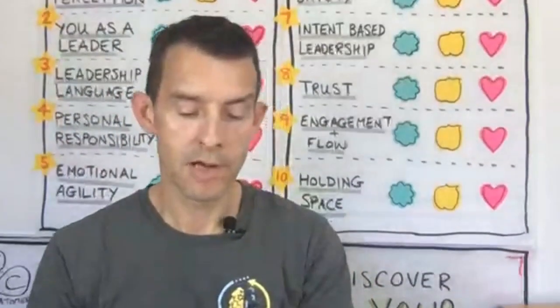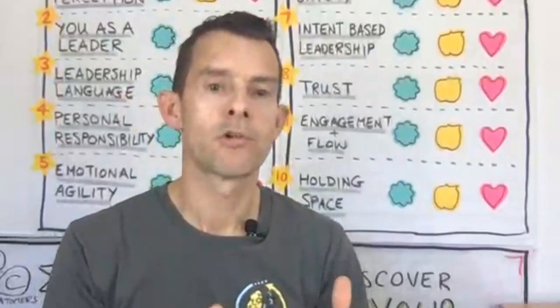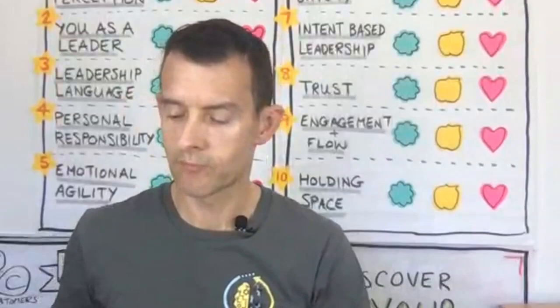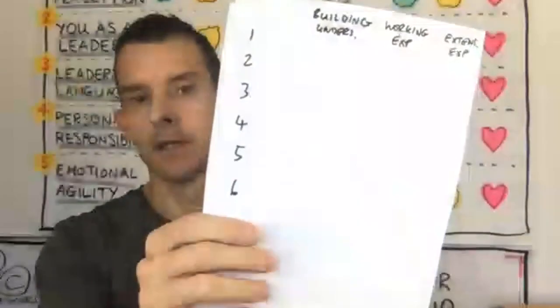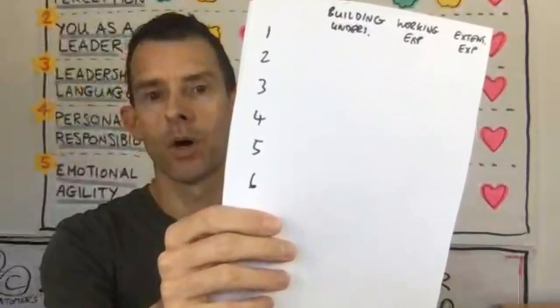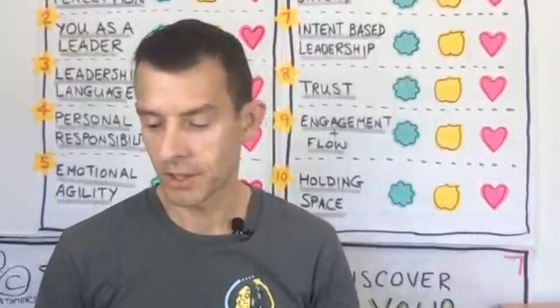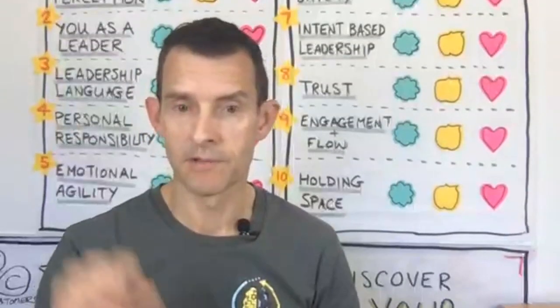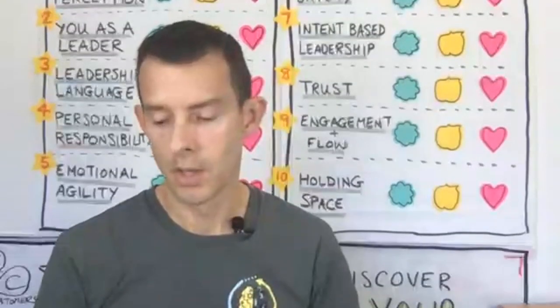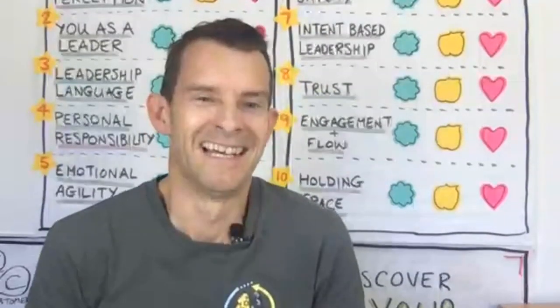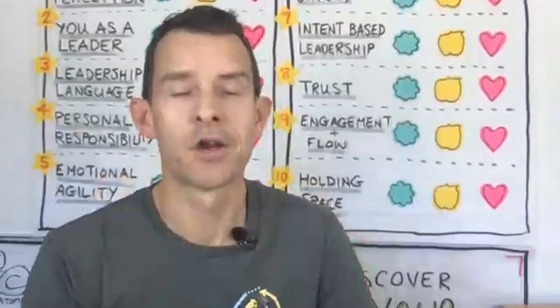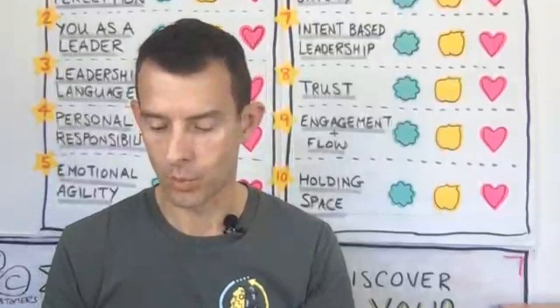Now think about that and self-reflect. How good are you at creating that gap — that space between stimulus and response? Write down topic number one: awareness and perception. How do you rate yourself? If you're really good at controlling yourself, score yourself at the top. If you do it sometimes, give yourself a middle score. If you're still learning, give yourself a low score.